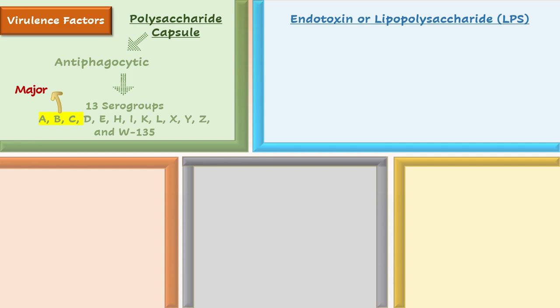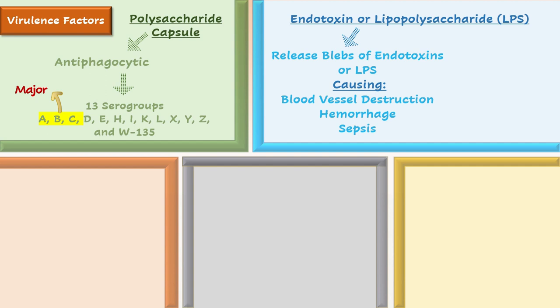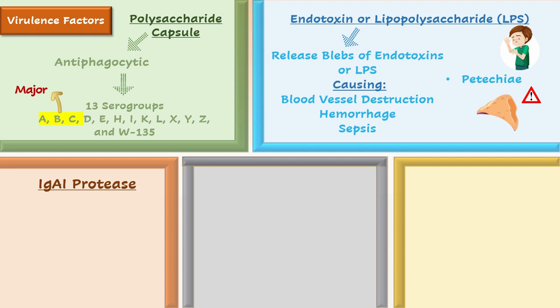Another virulence factor is endotoxin or lipopolysaccharide. Meningococci can release blebs of endotoxins or lipopolysaccharides, causing blood vessel destruction, hemorrhage, and sepsis. Tiny round red dots of hemorrhage called petechiae, or a petechial rash, are seen on the skin. This same hemorrhaging process can also damage the adrenal glands. Additionally, there is IgA1 protease, which cleaves the IgA antibody in half and helps in evasion of the humoral immune response.